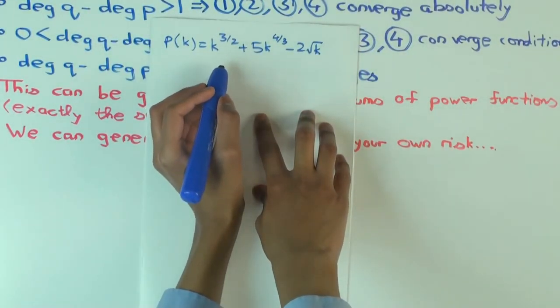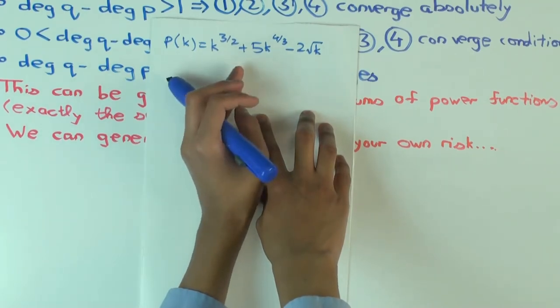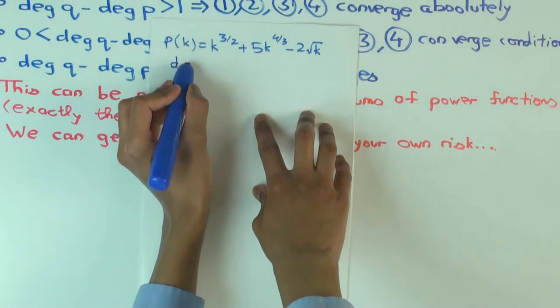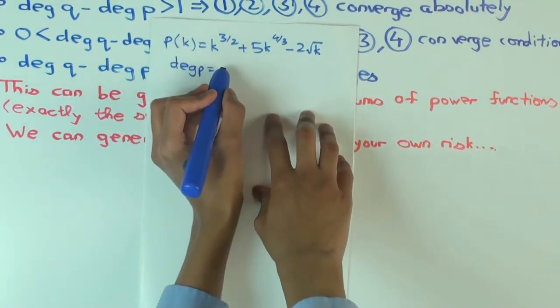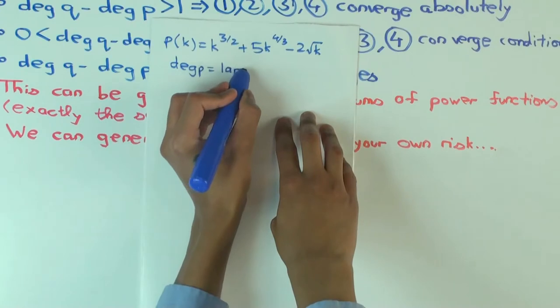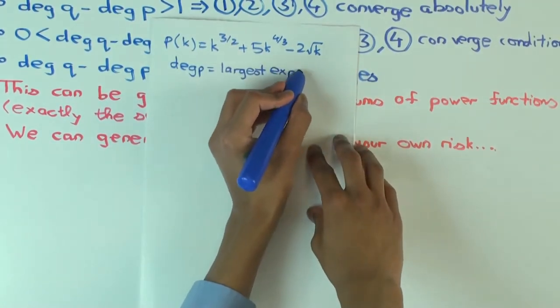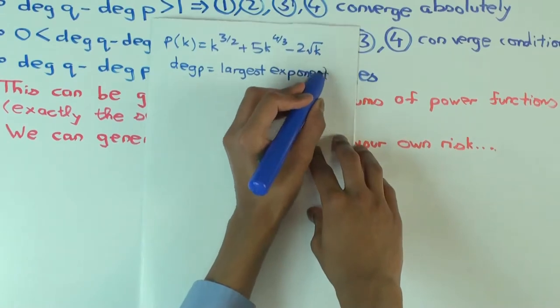Now, what is the degree of p? How would you define a notion of degree for a sum of powers? Where the degree of p is the largest exponent with a non-zero coefficient, in the same way as we define degree of a polynomial.